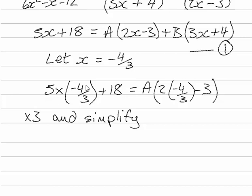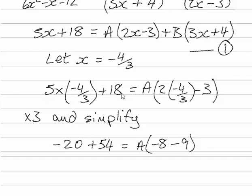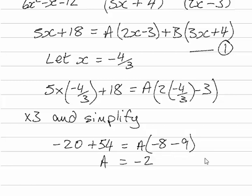So 5 times minus 4 is minus 20. 3 times 18 is 54. 2 times minus 4 is minus 8 and 3 times 3 is minus 9. 54 minus 20 is 34. Minus 8 minus 9 is minus 17. So that means that A is equal to minus 2.